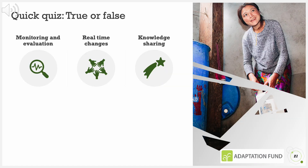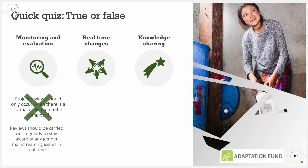Test your knowledge with this quick quiz. True or false: Project reviews should only occur when there is a formal evaluation to be completed. It is false. Reviews should be carried out regularly to stay aware of any gender mainstreaming issues in real time.